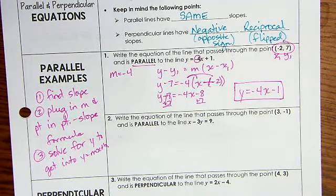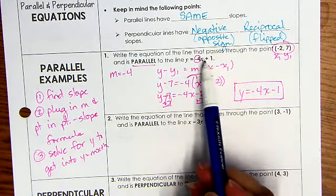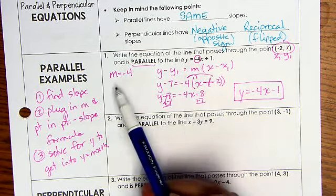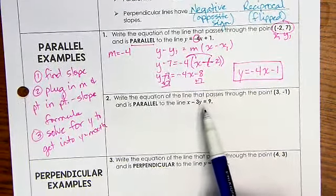All righty, here we go. Number two, we're adding just a little bit more. This one was very nicely written in y equals mx plus b already, so it was easy to pull out.